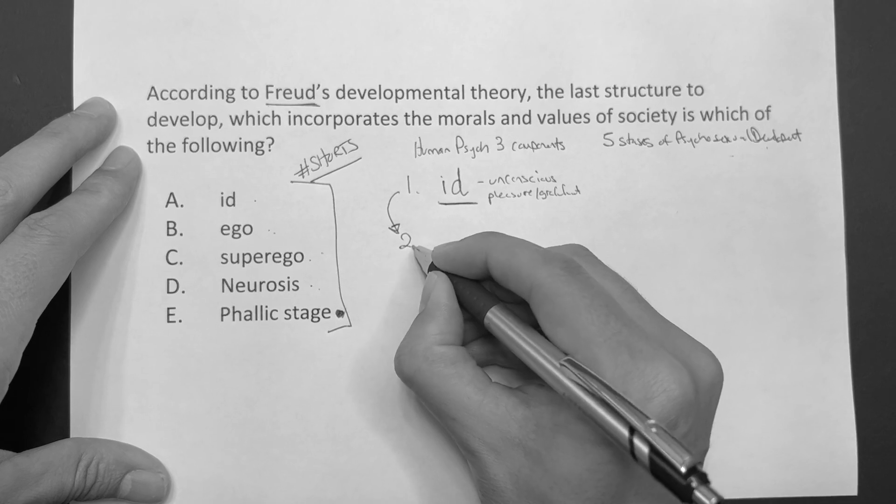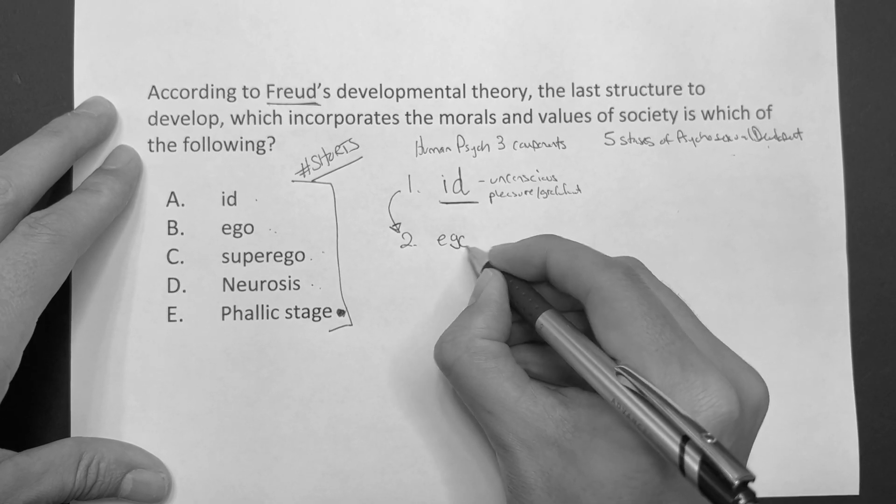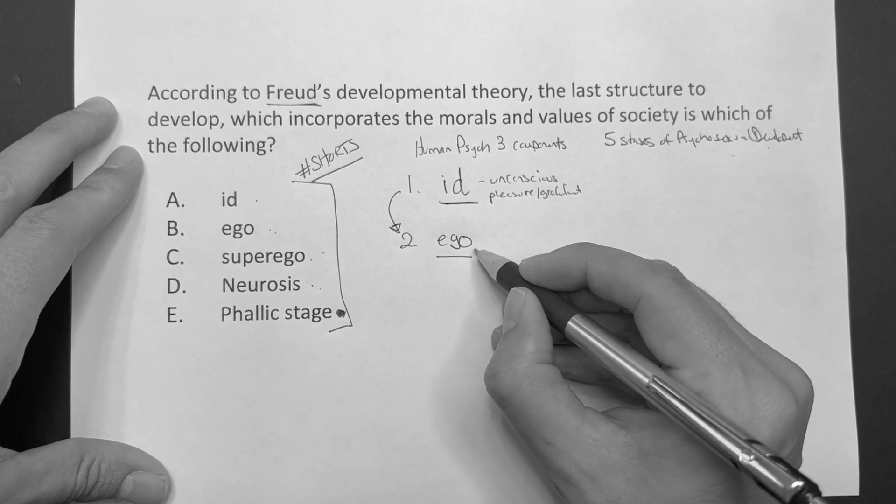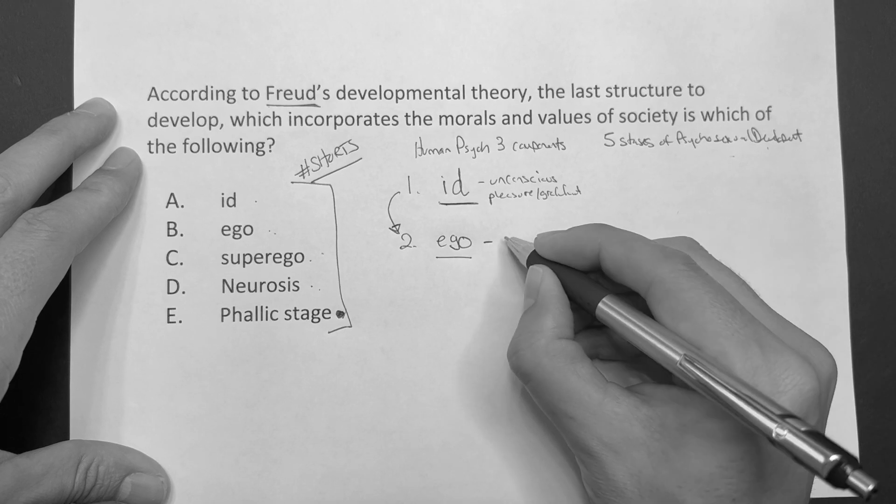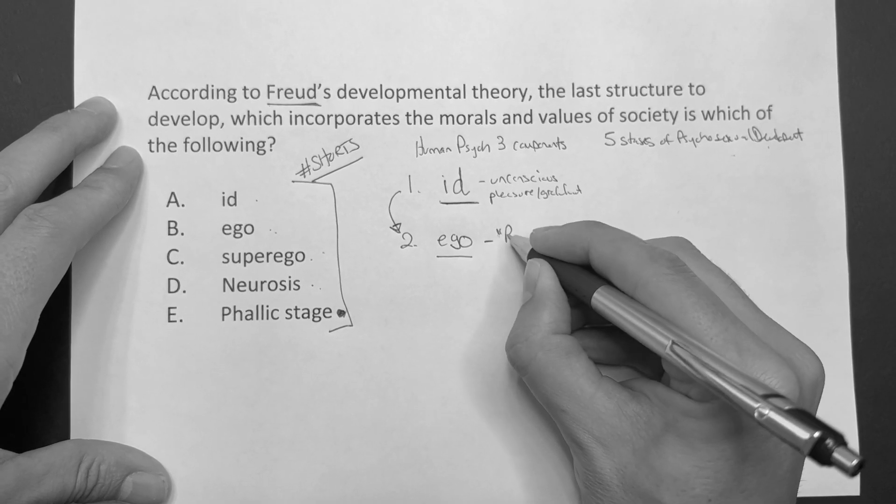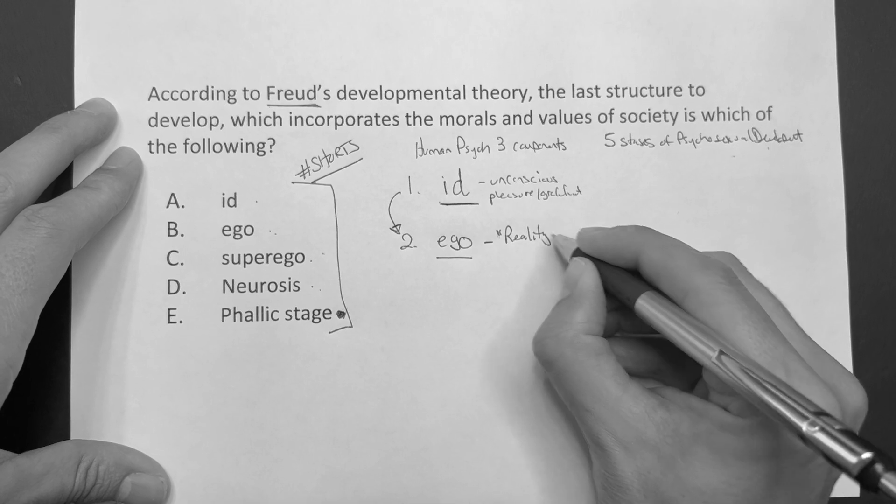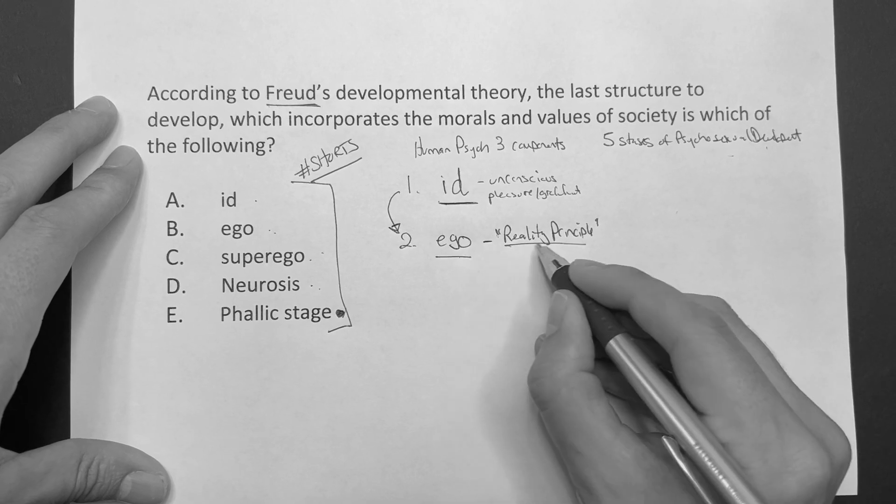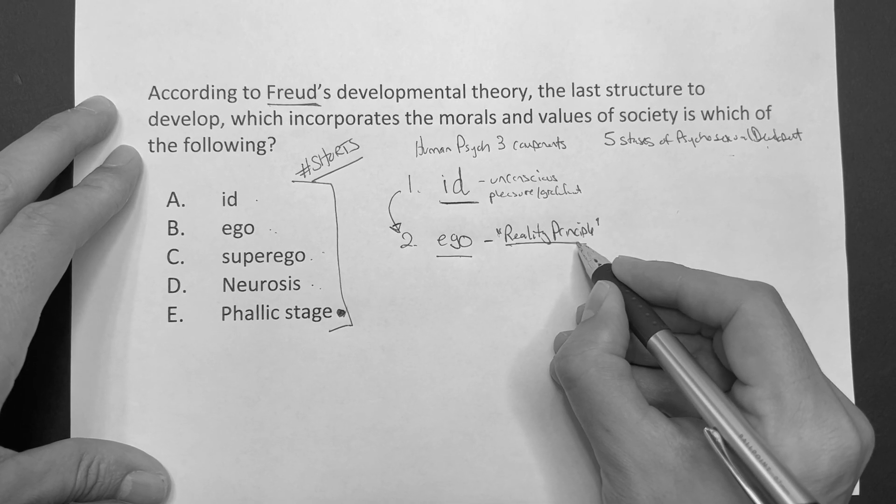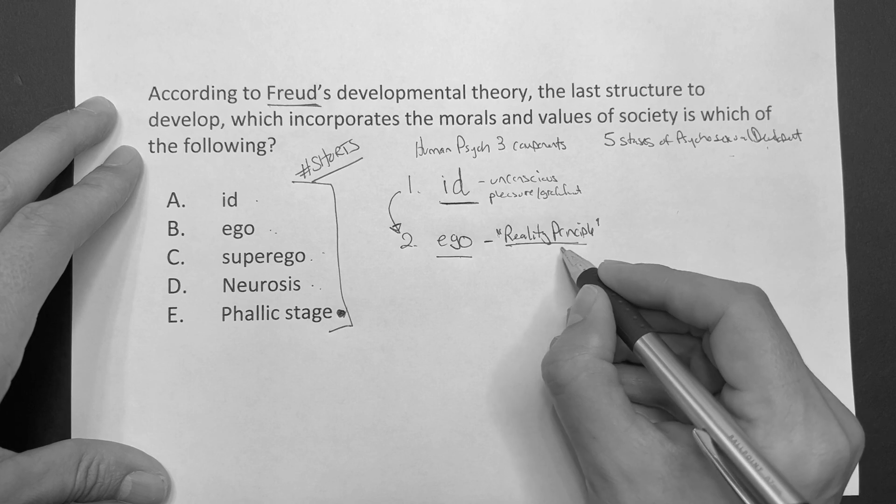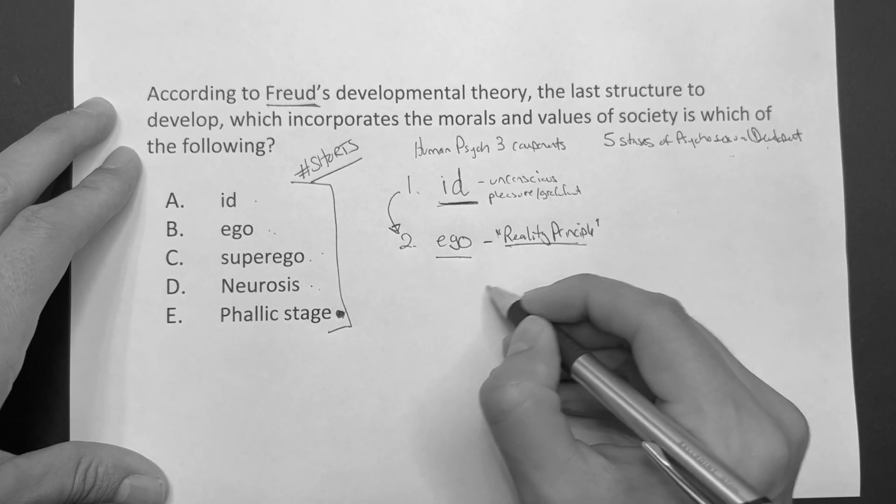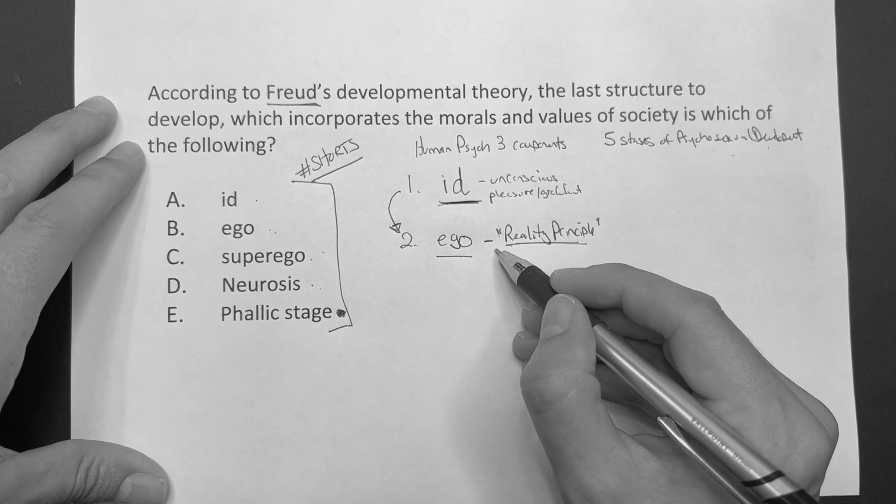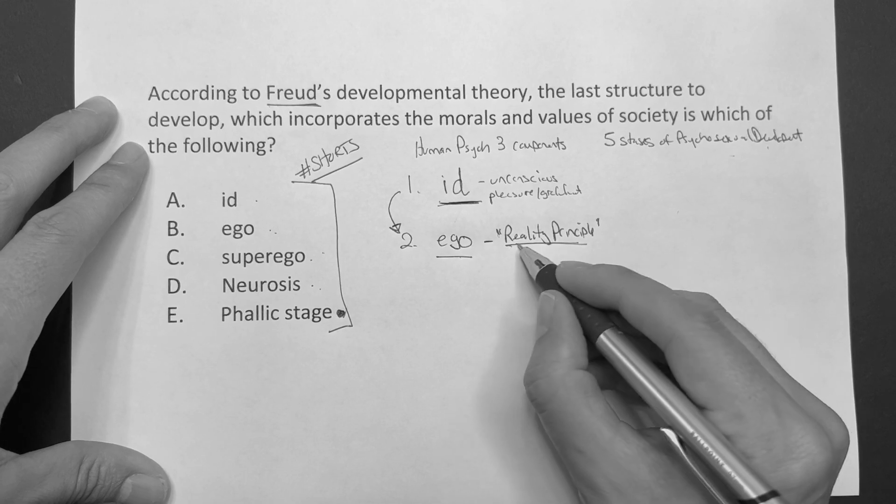From that we develop the ego. Now this develops from our desires to satisfy the id. But the ego, it actually runs or it operates on this reality principle. The ego runs on the reality principle, and that just basically says, look, I gotta compromise between what I want and what the world will give me. Between what I want, the id, your desires to seek pleasure, and basically what the world can give me. That's the reality principle.